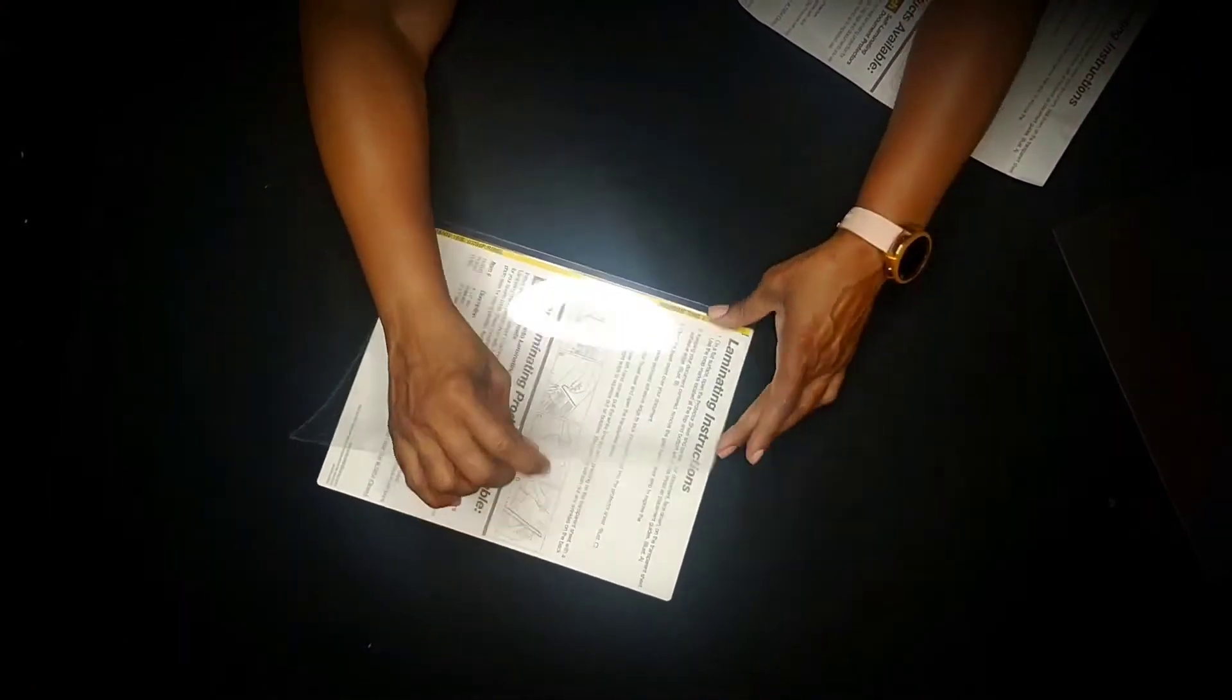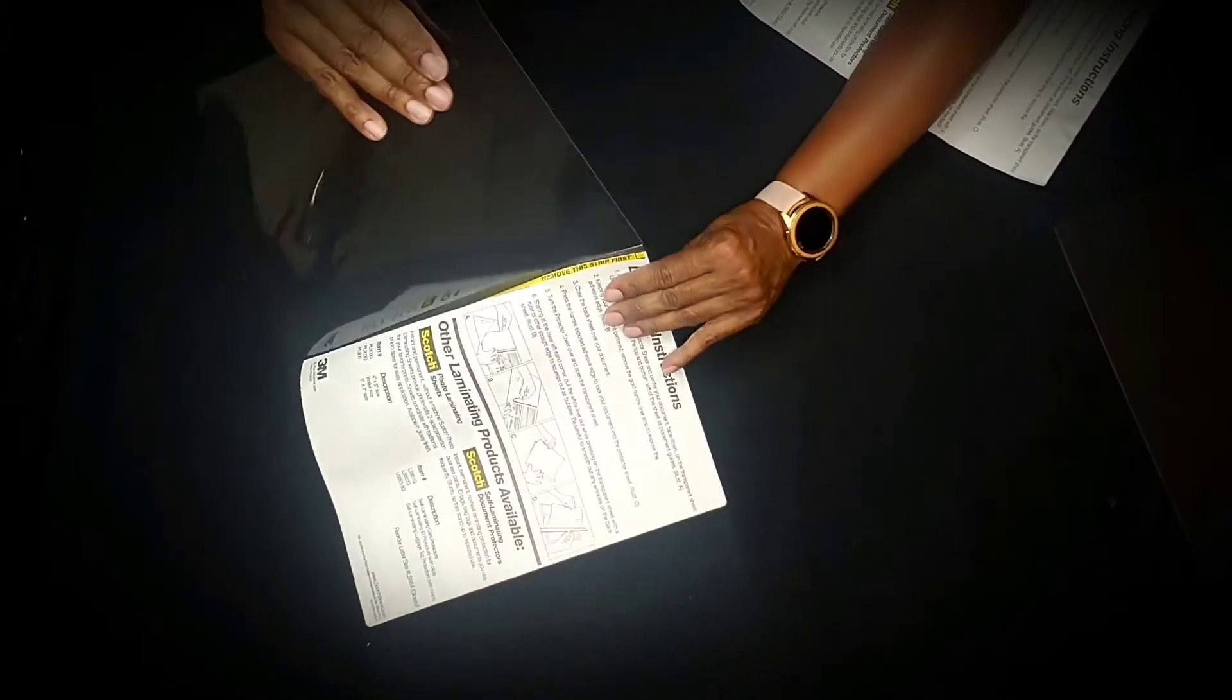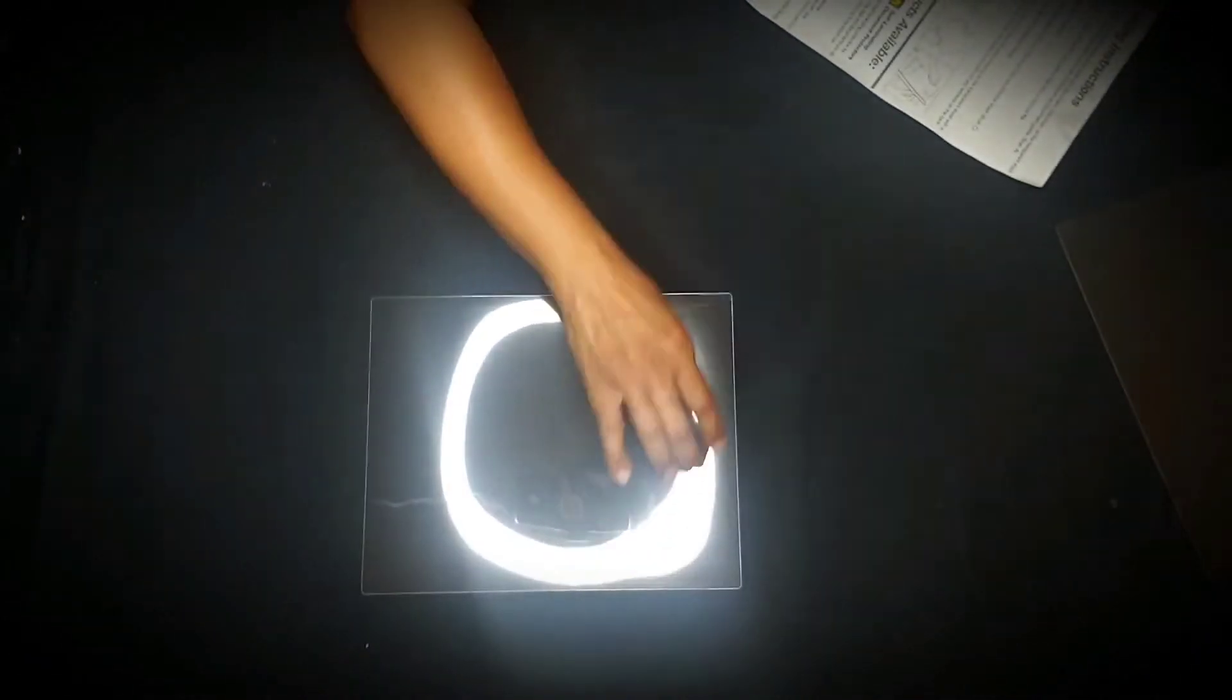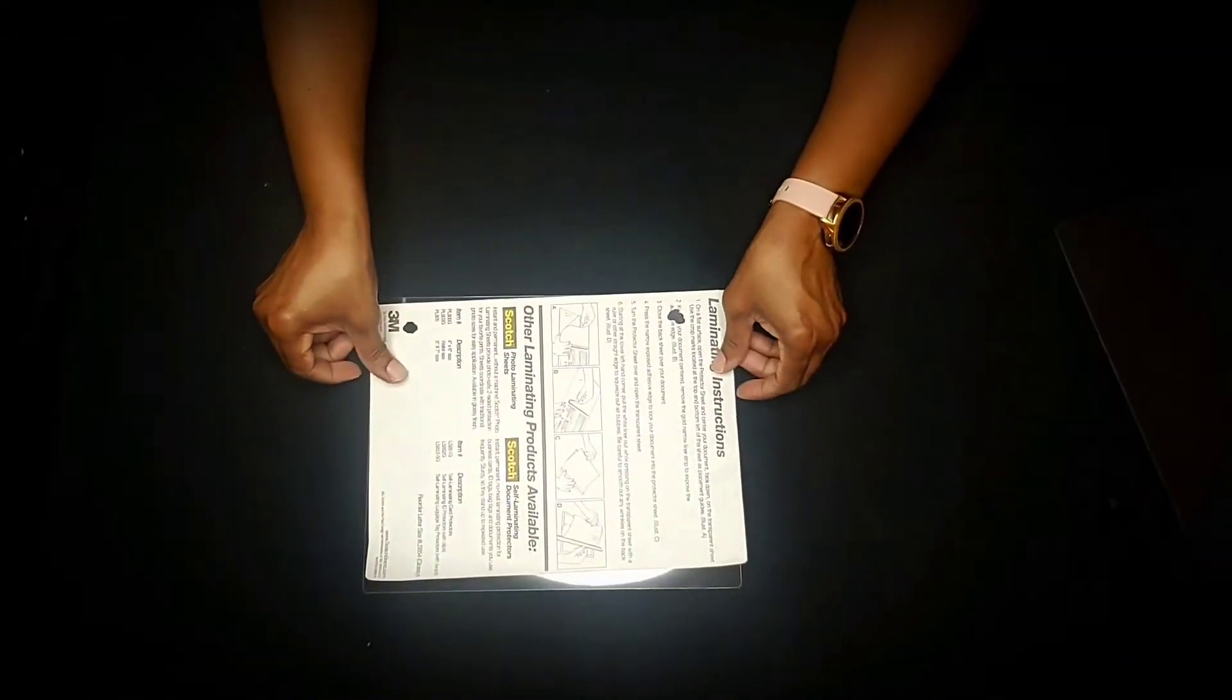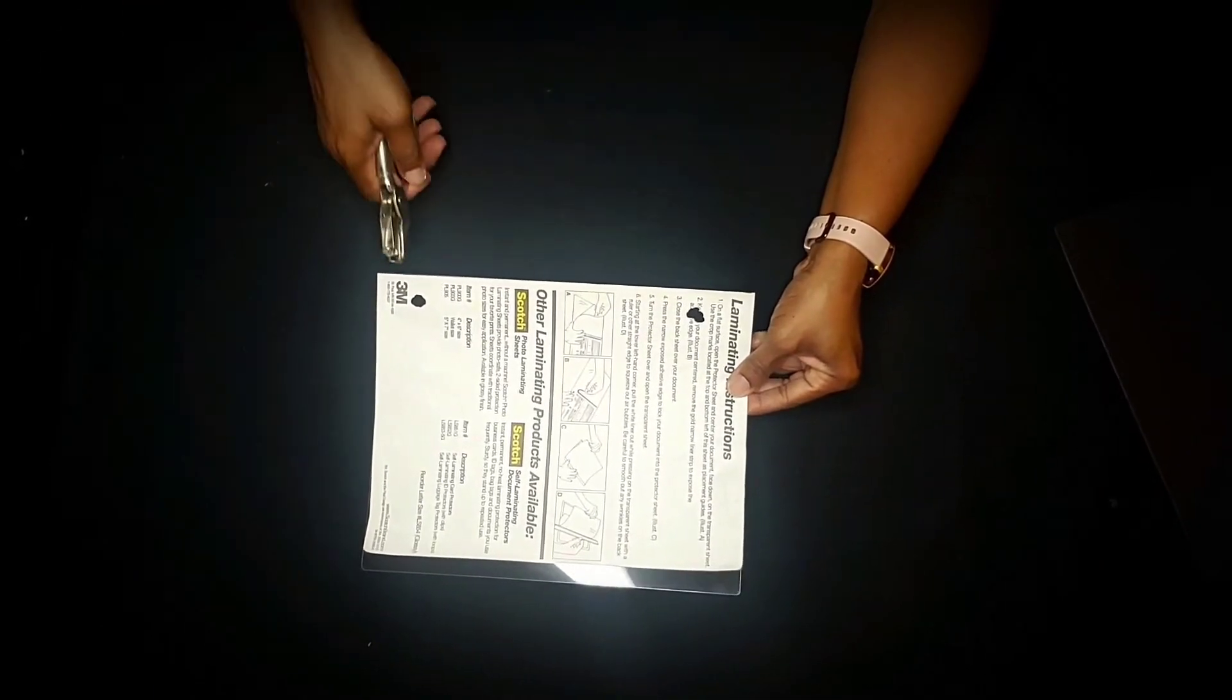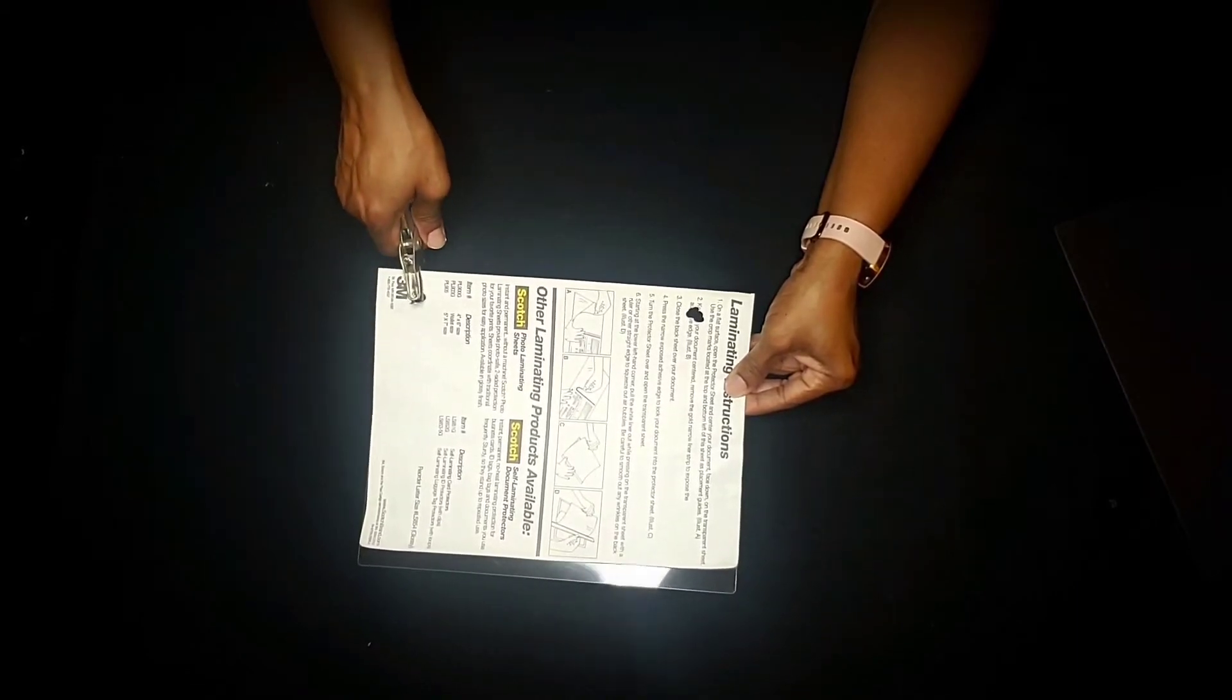This is what you're going to do. You have your laminated paper and what you're going to do is peel this off. Then what I did was I measured where I wanted to punch my holes at.